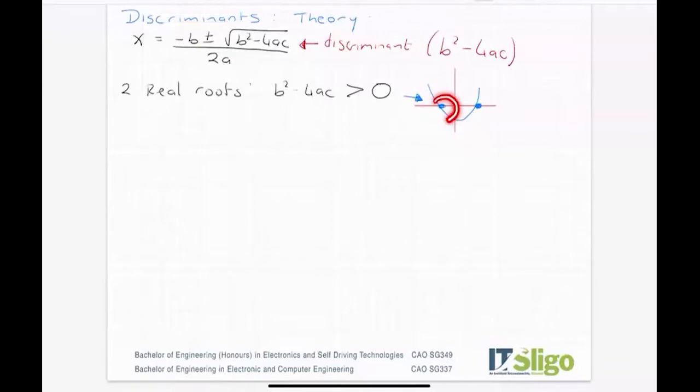The second case is when you get equal roots, or sometimes it's called one real root. And this happens when b squared minus 4ac is equal to zero. Now what does that look like if I'm going to plot it?